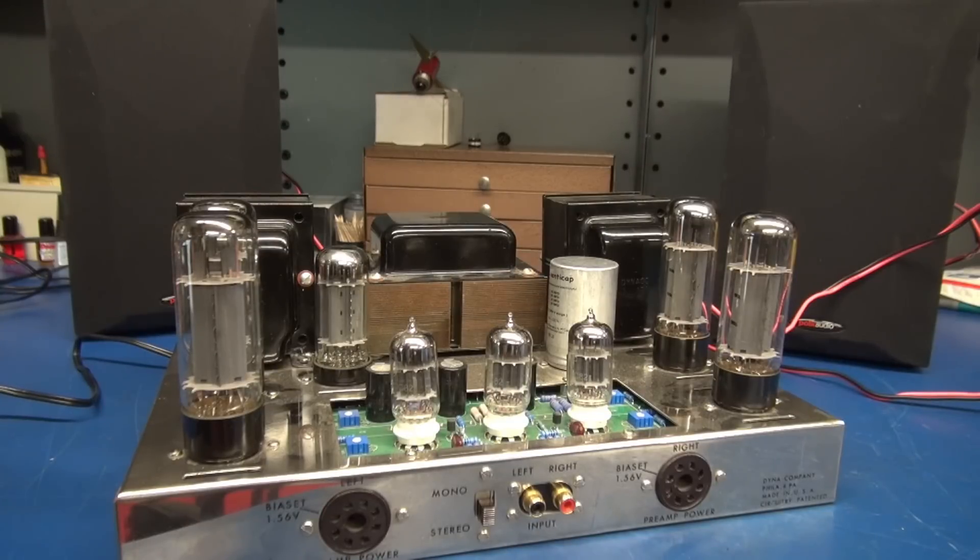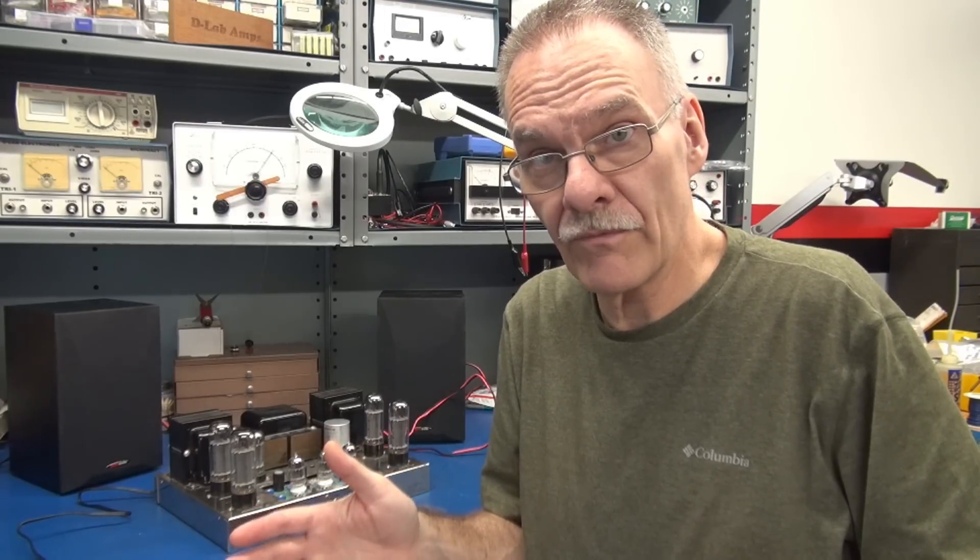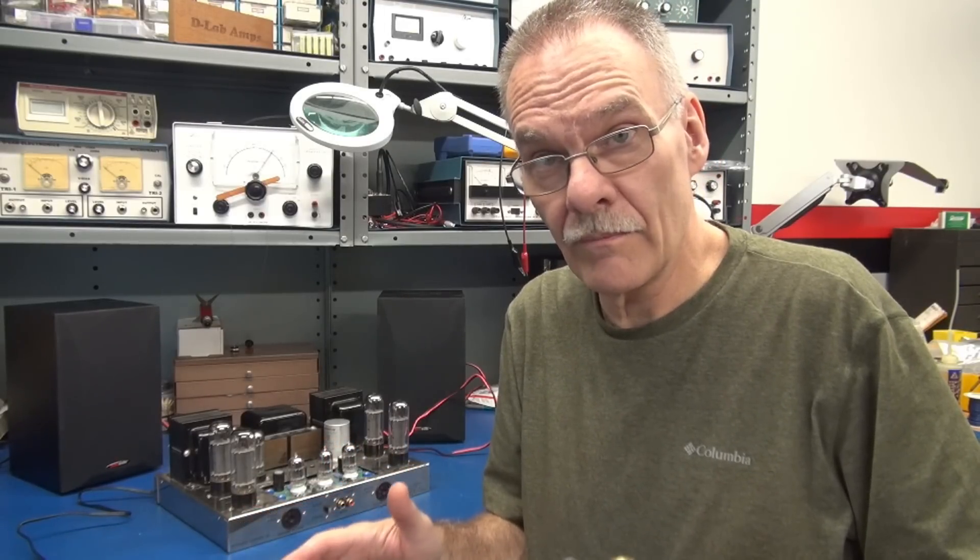I'm bringing the amp up on a variac right now. I always like to bring them up on a variac after changing a filter cap so we don't shock it. I'm applying 90 volts right now. Current looks stable. The amp is up. I can hear a slight buzzing. She is live, and the hum is gone. The filter cap corrected the problem. The next steps: I need to set the bias on the amplifier and give it a test run to make sure that it's good to go.